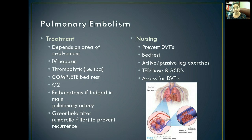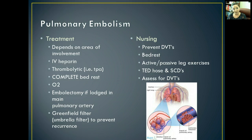We want to put the patient on complete bed rest to avoid dislodging further clots and causing worse damage to lung tissue. We'll give supplemental oxygen to restore oxygenation and tissue perfusion. The surgeon may also perform an embolectomy, especially if the clot is lodged in the main pulmonary artery, to remove the blockage and restore blood flow. They can also place a Greenfield filter — an umbrella-type filter — to prevent recurrence.